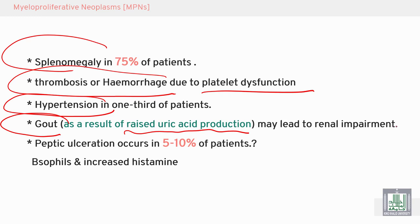Inflammation and pain in the joints is due to raised uric acid, which may affect the kidney leading to renal failure. Peptic ulceration occurs in 5–10% of patients due to release of histamine from basophils.